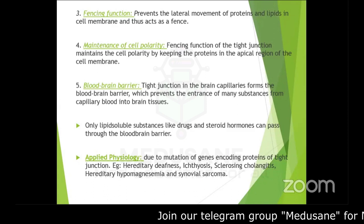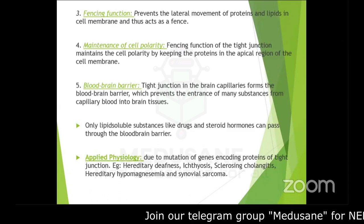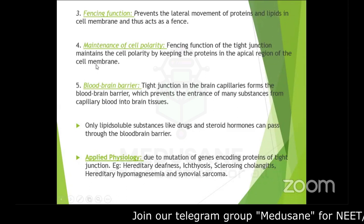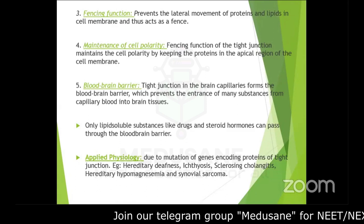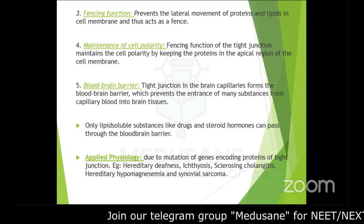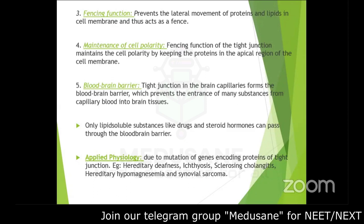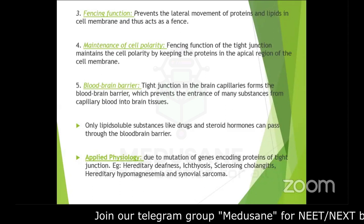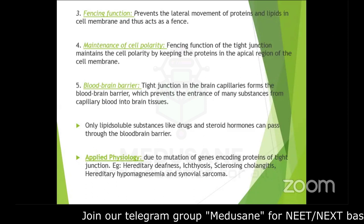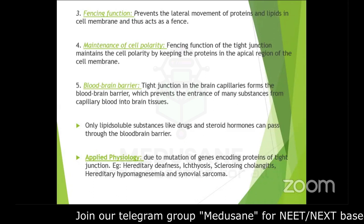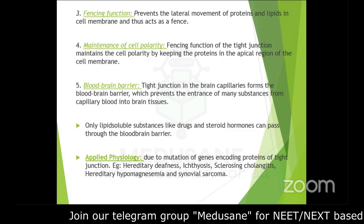Because of the fencing function, proteins and lipids are held in place and not allowed to move laterally. This allows tight junctions to maintain the polarity of the cell — fencing function maintains cellular polarity by keeping proteins in the apical region of the cell membrane. If the fencing function is lost, cell polarity will also be lost. Finally, tight junctions form the blood-brain barrier.